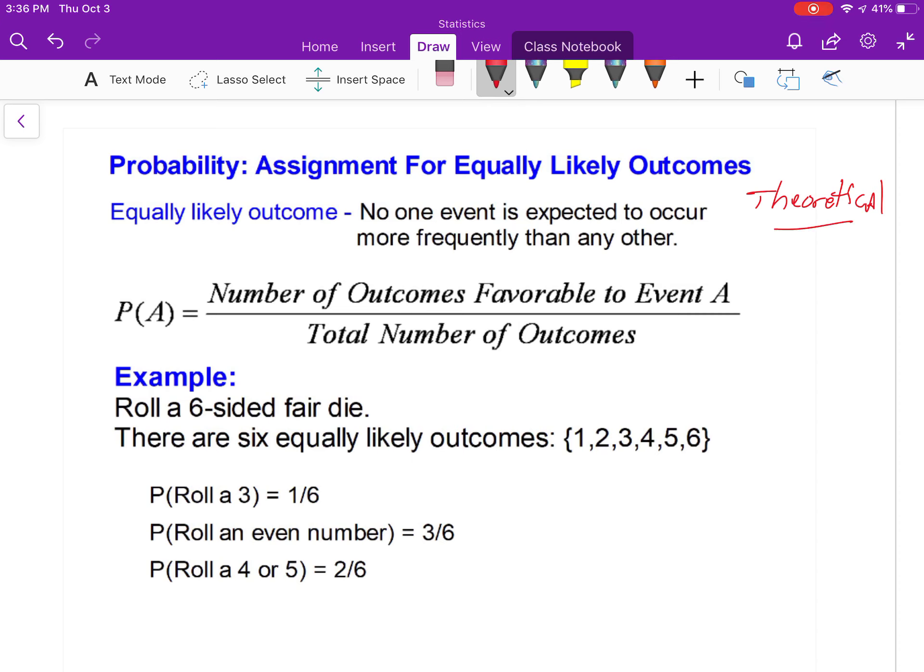What should happen in theory: the probability of A is the number of outcomes that are favorable to your event A, and on the denominator now is the total number of outcomes. I've got here a six-sided die. Here's your six equally likely outcomes: getting a 1, 2, 3, 4, 5, or 6. So on the denominator of each of these, I get a 6.